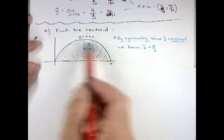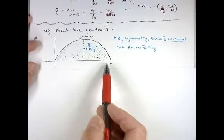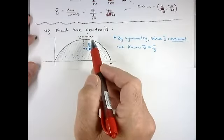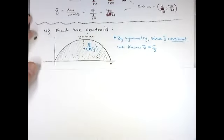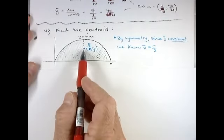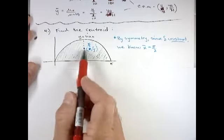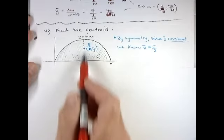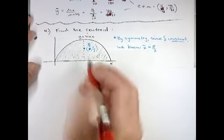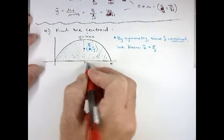Imagine we have a thin plate made up of one arc of the sine function between zero and pi. Now if the density is constant, one thing that is kind of nice is you can use your intuition. By symmetry of our sine graph, we would know that the x coordinate of our centroid would have to lie right on the middle, right here at x equals pi over two.